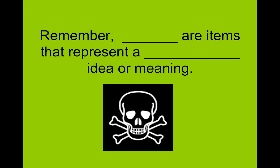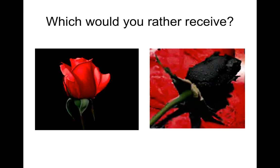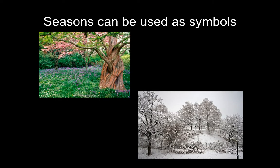Remember that symbols are items that represent a larger idea or meaning. We see the skull and crossbones — we know that's either a pirate ship coming or it means something is poisonous. That is a symbol for poison. Here we have a whole heart and a broken heart — we all know what that means. Seasons can also be used as symbols. A lot of times the green spring season is seen as the time of rebirth — in your lifetime, the green spring would be your childhood. And winter is usually referred to as being near the end of life.